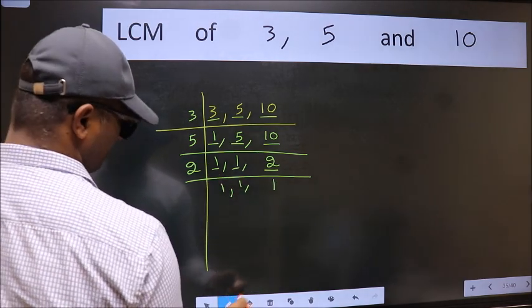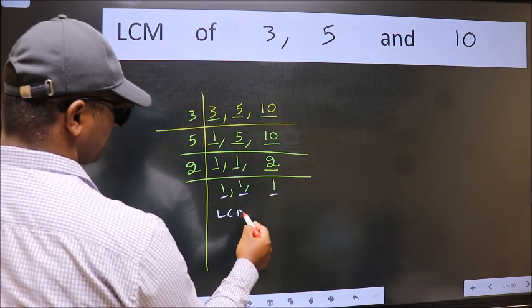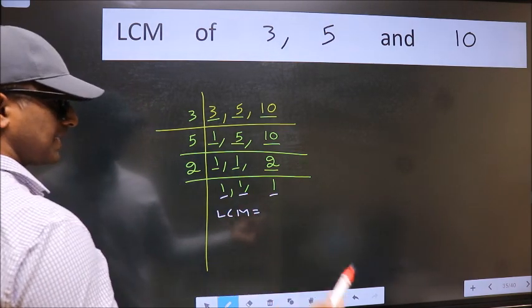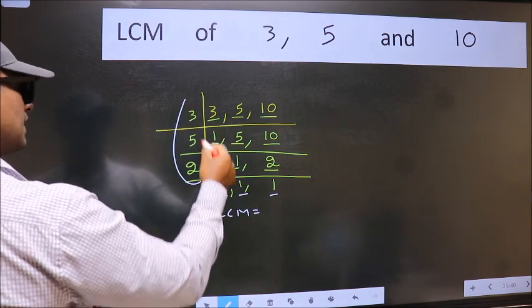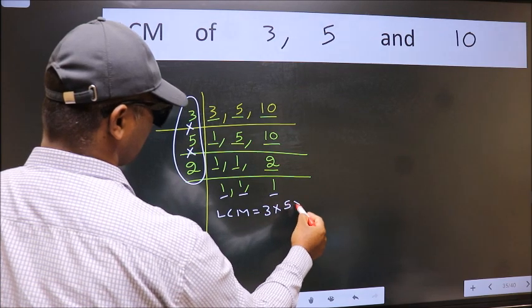So we got 1 in all the 3 places. So our LCM is the product of these numbers that is 3 times 5 times 2.